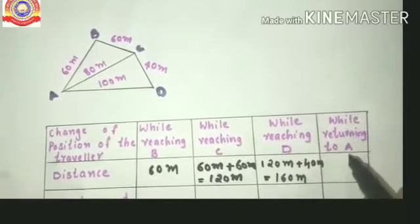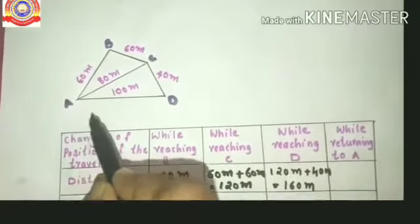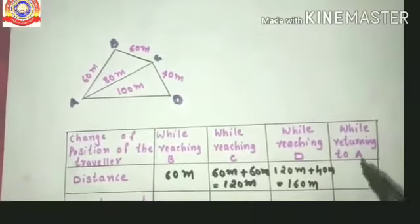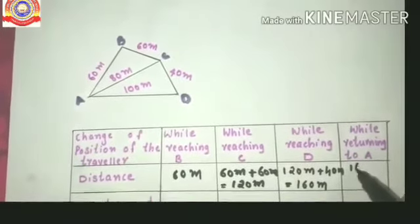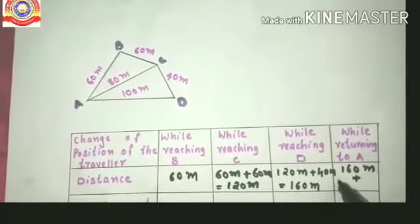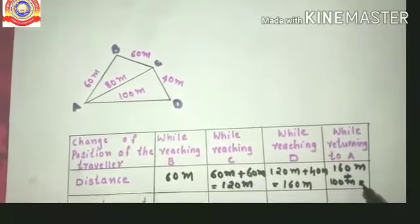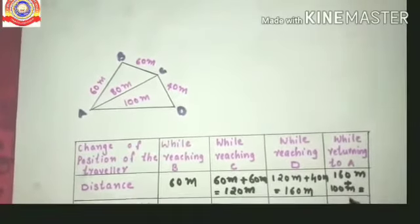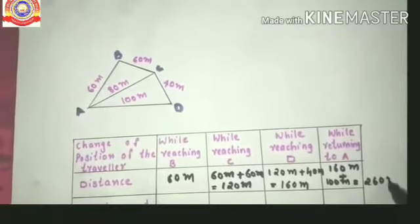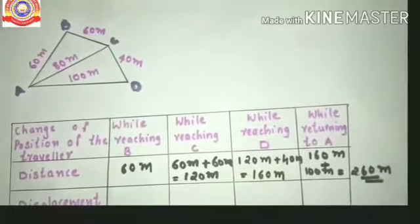So this is the distance travelled by the object while reaching D. When it returns to A, the distance is 160 metres plus 100 metres, since 100 metres is the distance from D to A. The total distance is 160 + 100 = 260 metres.